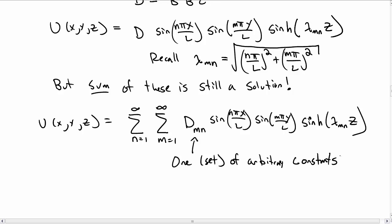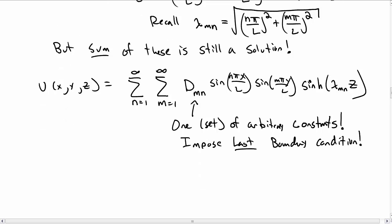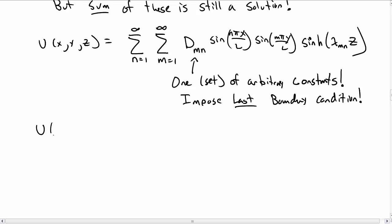What we need to do is impose our last boundary condition, and that is what's going to tell us our d_mn's. If you remember, our last boundary condition was that the temperature u at x, y,